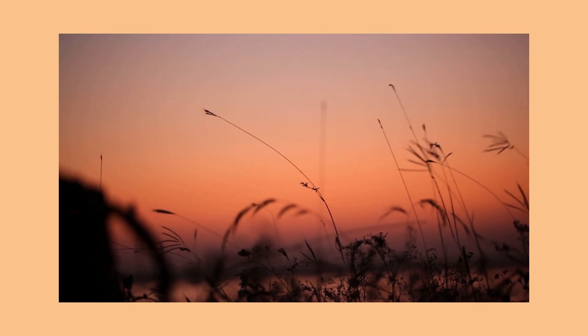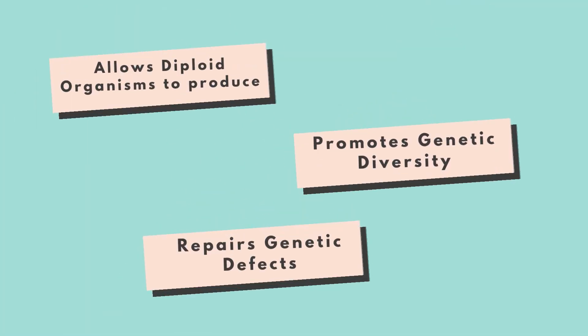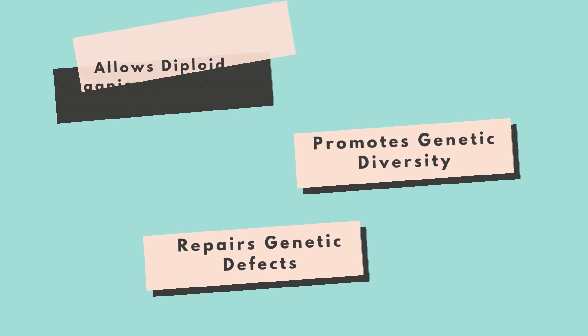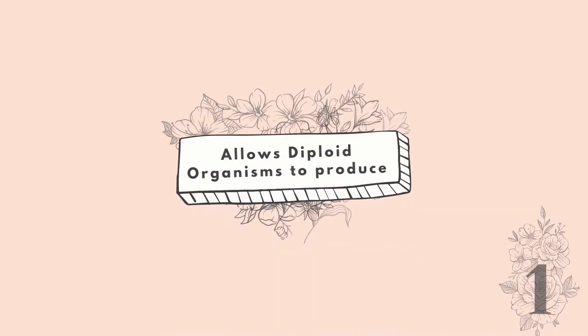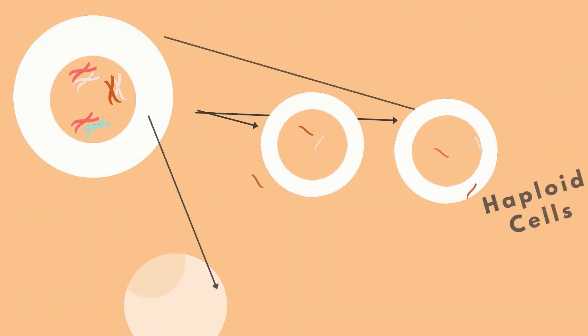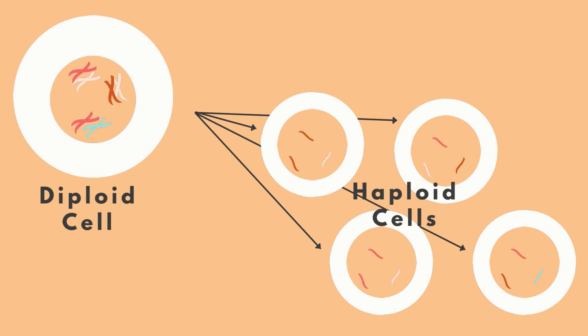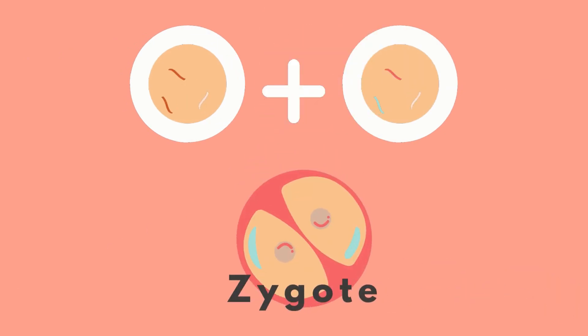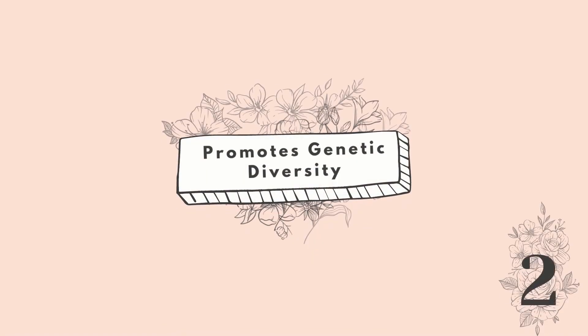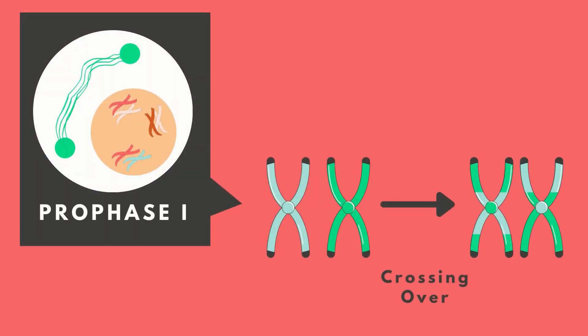Meiosis is essential to living organisms for several reasons: it allows diploid organisms to reproduce sexually, it promotes genetic diversity, and it aids in the repair of genetic defects. Meiosis allows a diploid cell to be reduced to a haploid gamete, which can then recombine with another haploid gamete to form a diploid zygote through fertilization.